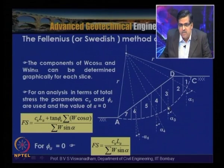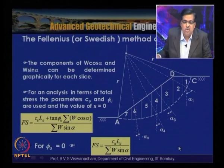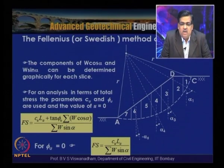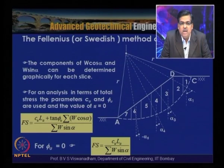From the center of each slice, a line is drawn to the center of rotation. The angle α with the vertical is recorded graphically as α1, α2, α3, α4, α5, α6 for slices 1 to 7. As we traverse from slice 1 to 7, the angle changes from positive to negative. Components W·cos α and W·sin α are then determined.